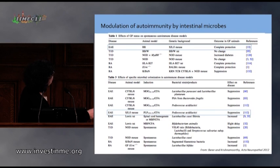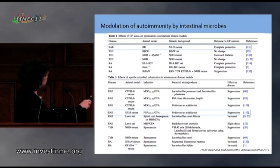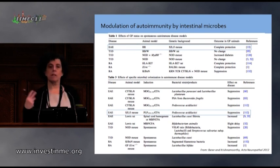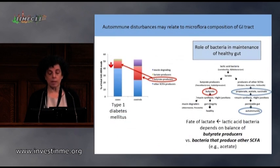We also know that these microbiome products are related to the modulation of autoimmunity. In animal models there can be actual changes — in a mouse model of multiple sclerosis, you can completely change and prevent disease by altering the microbiome, while in other scenarios you may have suppression or even increased disease. So genetics, the microbiome, and the timing of introduction can all have an effect.